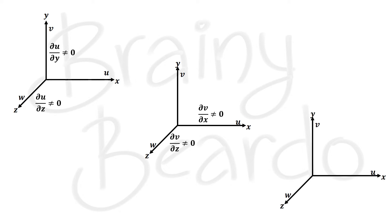For flow in the z-direction, the gradient of W with respect to the x-direction and the gradient of W with respect to the y-direction should not be equal to zero. If all six gradients are equal to zero, it refers to irrotational flow. Even if five out of six gradients are zero and only one gradient is not equal to zero, that also refers to rotational flow.